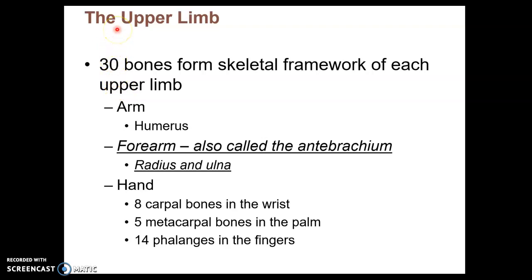We continue in the appendicular skeleton with the upper limb, which consists of 30 bones. Running down one side of the body, the arm bone is the humerus. Moving distally, there are two forearm bones, the radius and ulna.